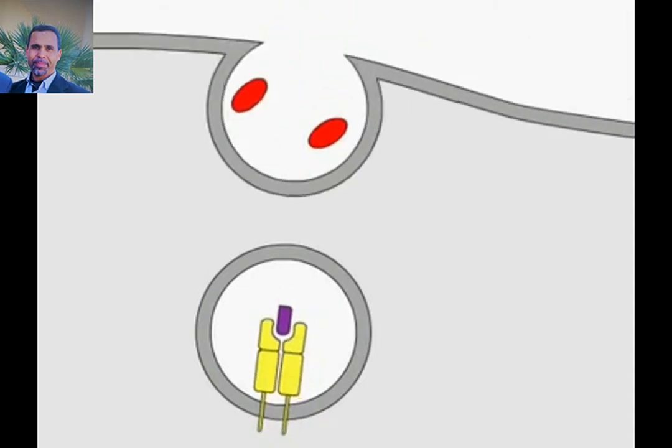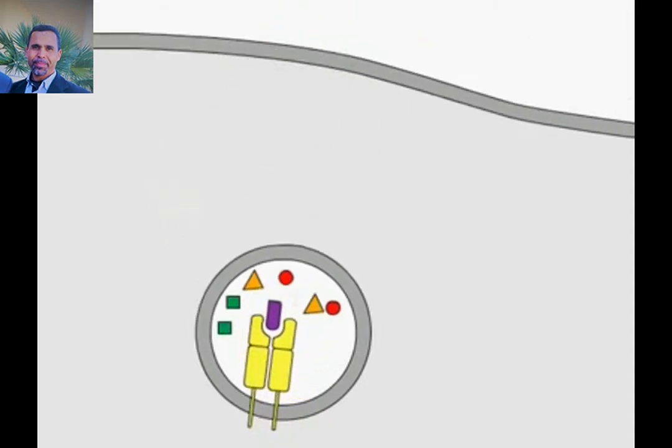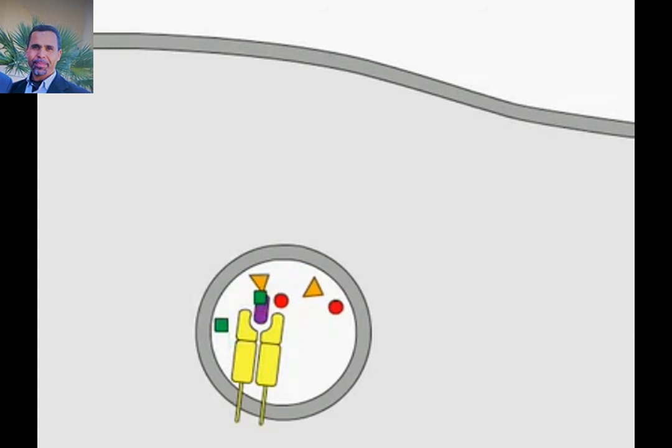Engulfed pathogens or their proteins are also degraded by acid-activated proteases into peptides, but these cannot immediately bind to the class 2 molecule because the CLIP peptide still occupies the peptide-binding groove.